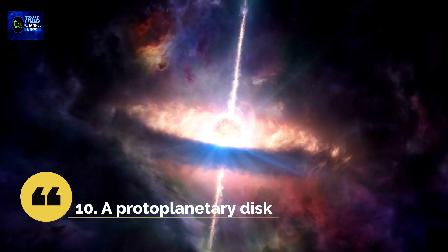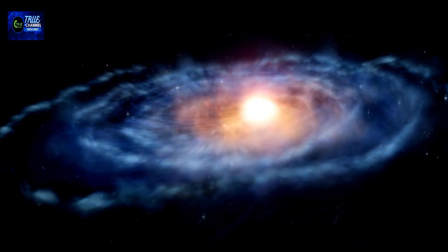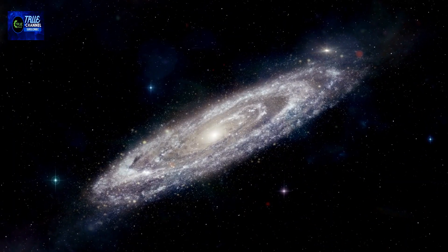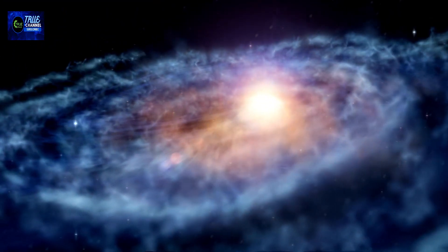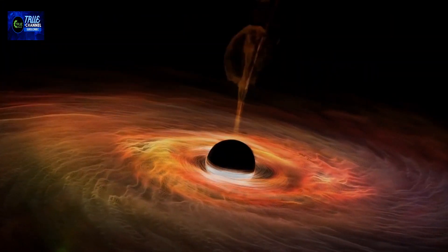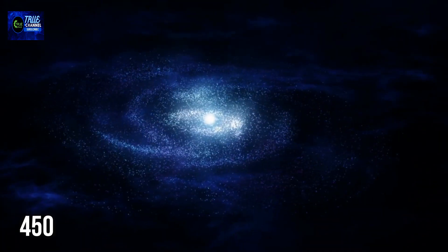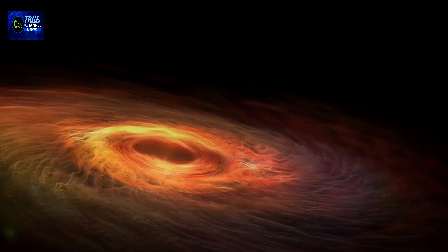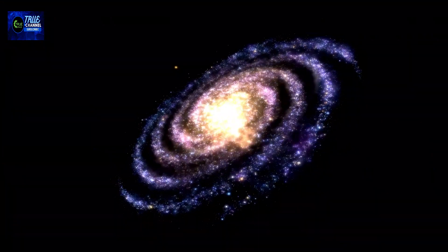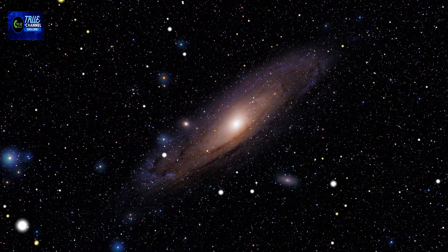Number 10: A Protoplanetary Disc. The James Webb Telescope has seen some truly remarkable sights in its first year of operations. One of the most amazing discoveries was a protoplanetary disc, which is a disc of gas and dust that is believed to be a precursor to a planetary system. This disc was observed around a young star called HD 142527, located about 450 light-years away from Earth in the constellation of Lupus.